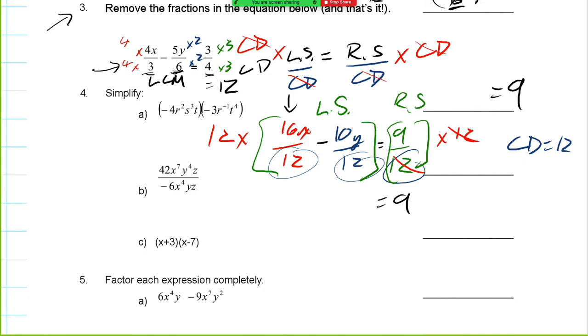And on the left side of the equation, technically, we would have to use distributive property. But when you do that, the 12s would cancel out, and then the 12s would cancel out again. So again, you're left with 16x minus 10y. So we get 16x minus 10y is equal to 9. And that would be removing the fractions from this specific equation.